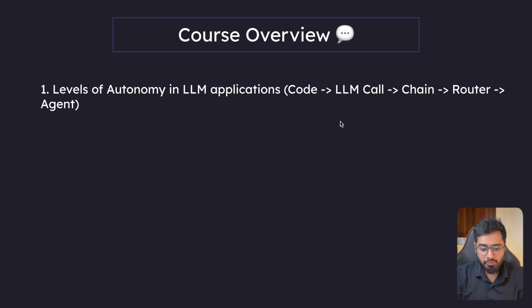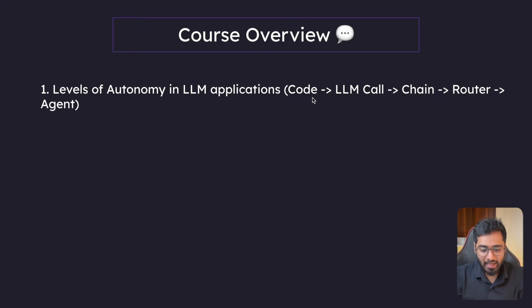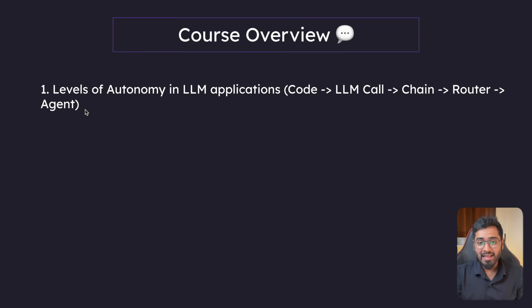Let's go ahead and look at the course overview. First, we will look at the different levels of autonomy in LLM applications — autonomy meaning freedom. Starting with code, which has very little freedom to think on its own and does exactly what we tell it to. And at the other end, we have agents, which have very high autonomy and can think on their own. That is exactly where LangGraph is going to come into the picture.